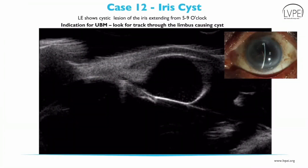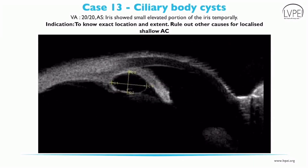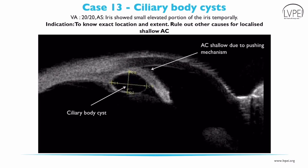UBM finds clinical importance in cases with cystic lesions of the iris. A cyst in the iris is seen as a round area with low internal echogenicity on UBM. It can also help in tracing the cyst tract leading to cyst formation, as seen in this case at 6 o'clock in the limbus. In another patient with a small localized elevated portion of the iris temporally, UBM showed a large cystic area with low internal echogenicity in the ciliary body, giving the diagnosis of ciliary body cyst. The ciliary body cyst is seen pushing the iris anteriorly, resulting in localized shallowing of the anterior chamber.